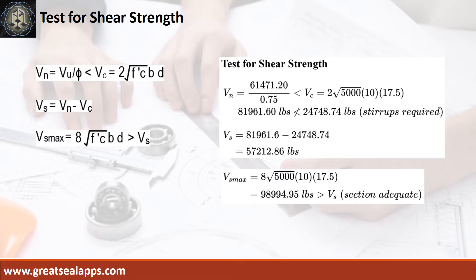The shear force capacity of stirrup is 57,212.86 pounds, less than 98,994.95 pounds maximum stirrup capacity.